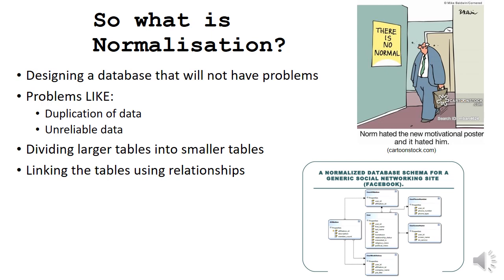So coming back to this topic, normalization, that was the name of this PowerPoint. So designing a database that will not have problems is what normalization aims at. We do not want problems within the database. And the problems could be you have duplicate data or you have unreliable data. And normalization will make sure that this does not happen. The process of normalization usually means that you will divide larger tables into smaller tables. And then you will link the tables using relationships.